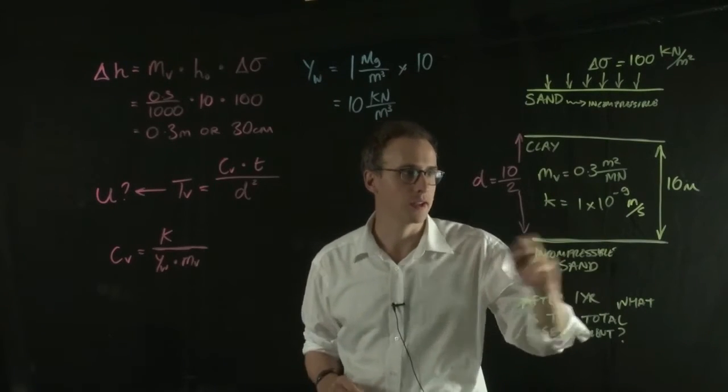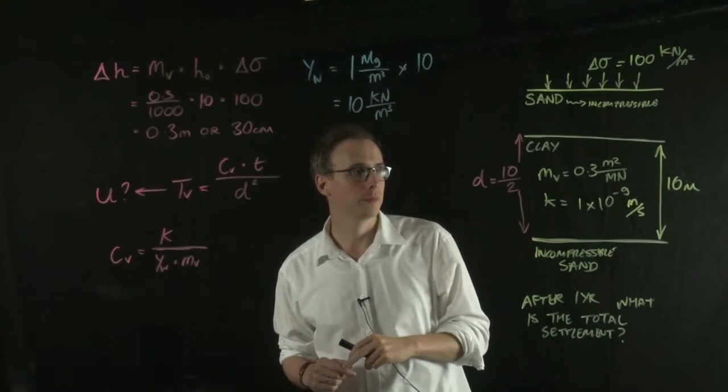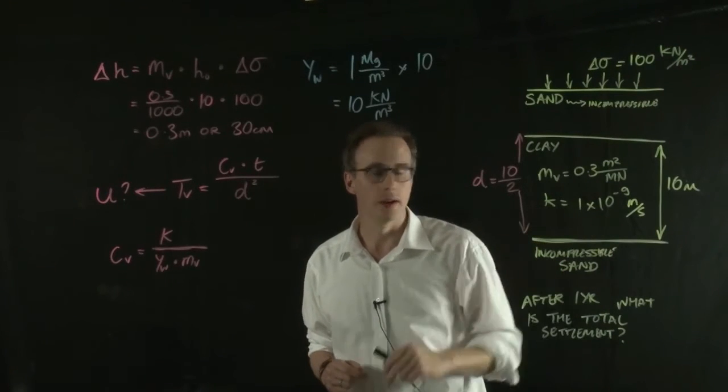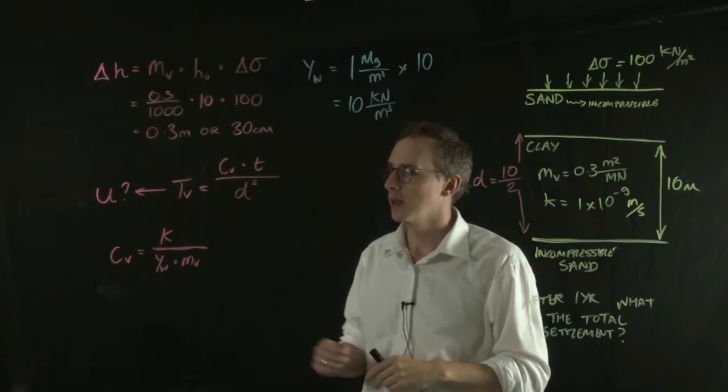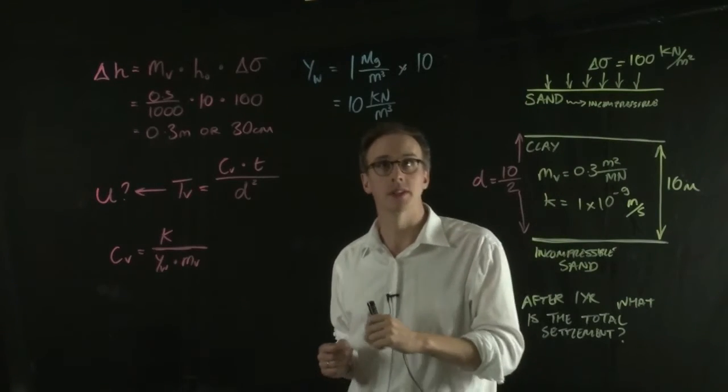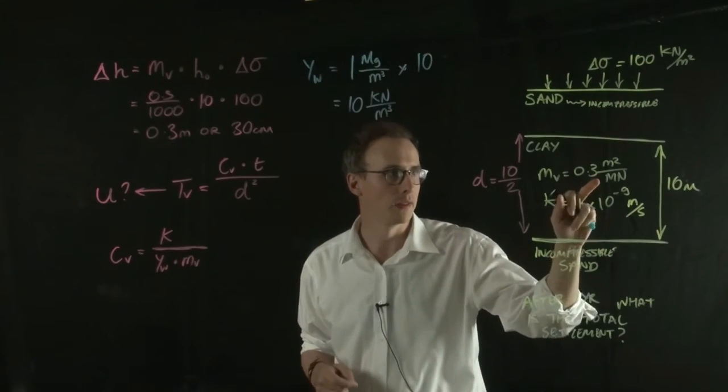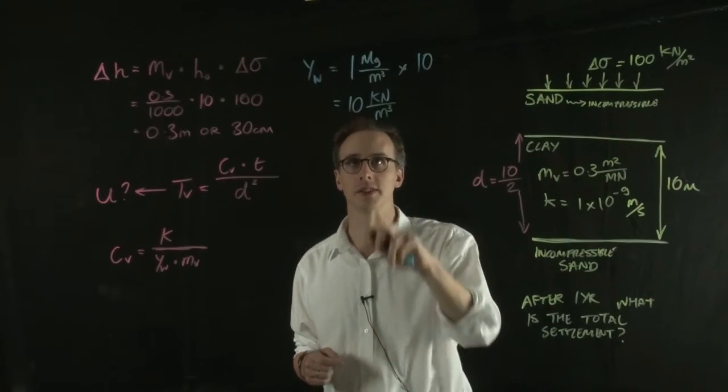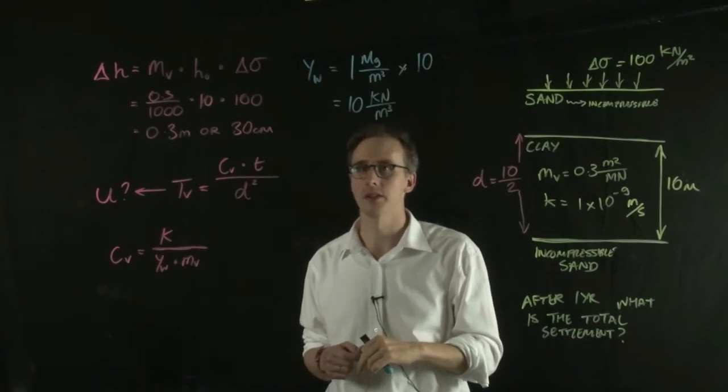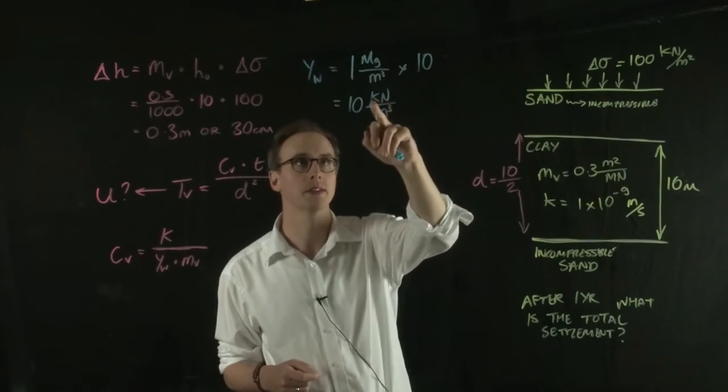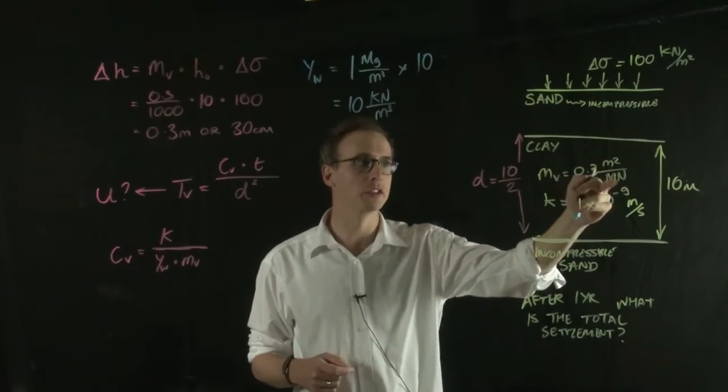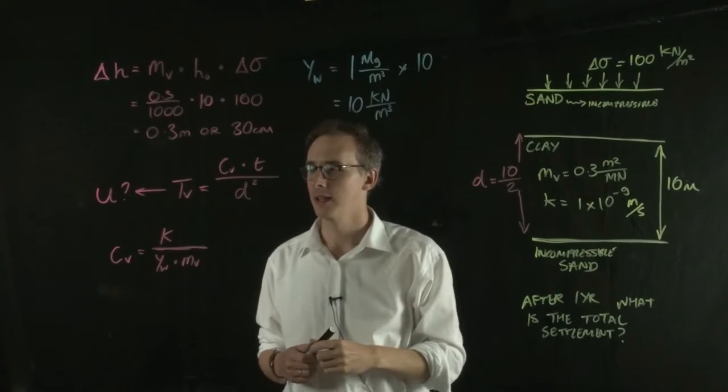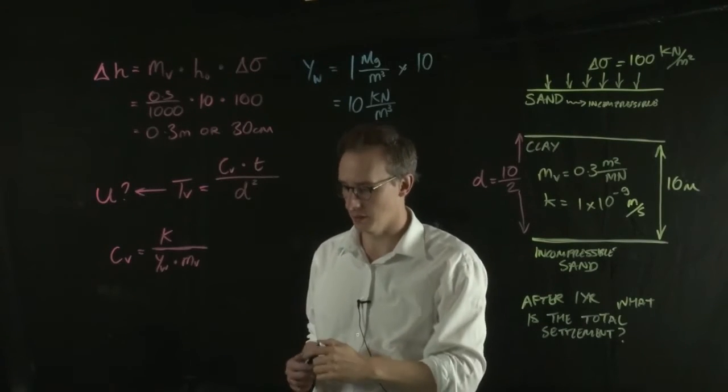The permeability is given in the question, and the MV value is given in the question. Again, we need to be careful that the units of MV in metre squared per meganewton are the same as the units of unit weight. So we don't have meganewtons, but we convert that to kilonewtons. So we do the same as what we've done up here.